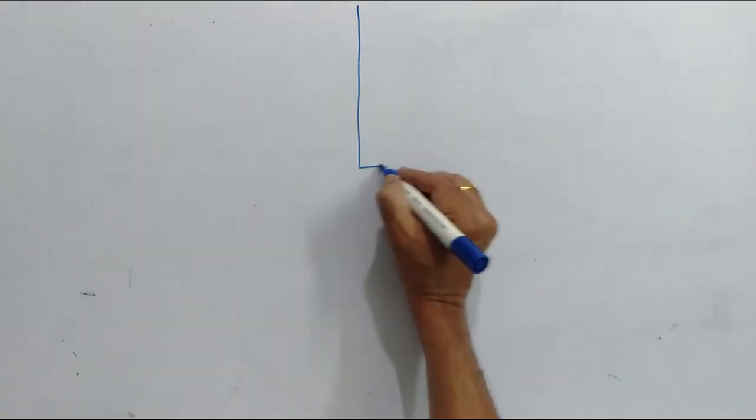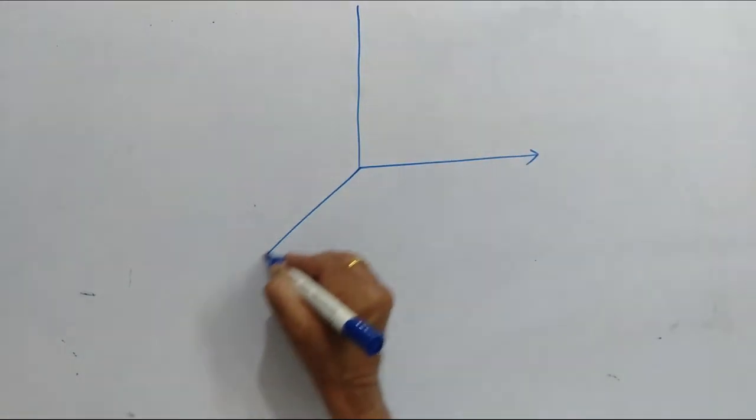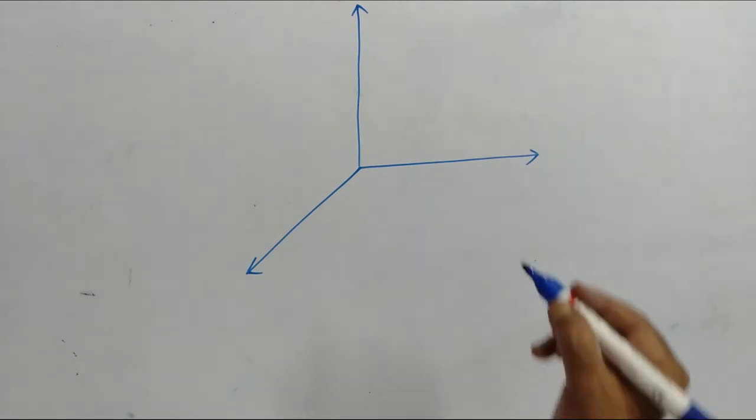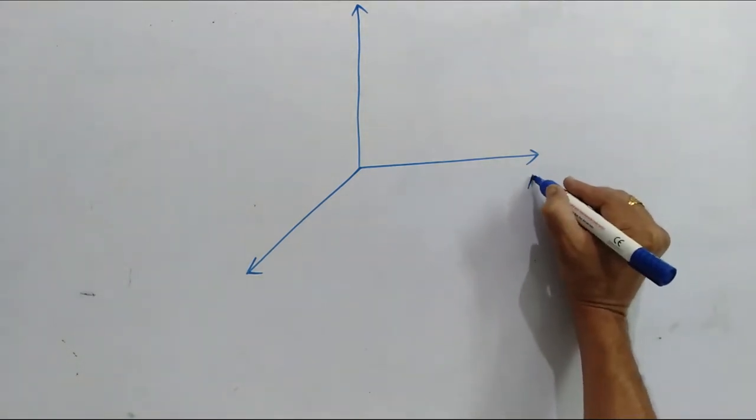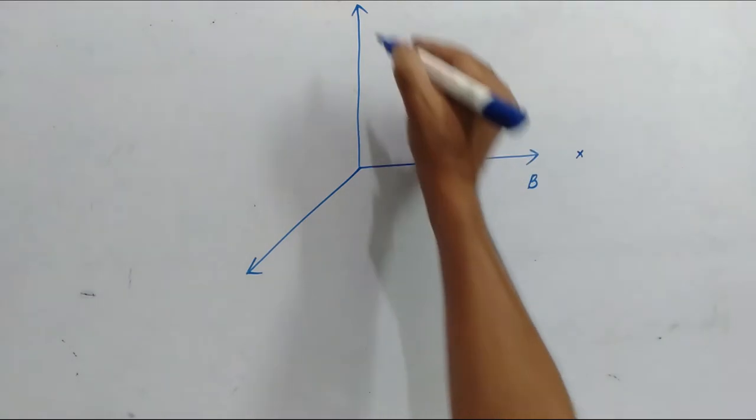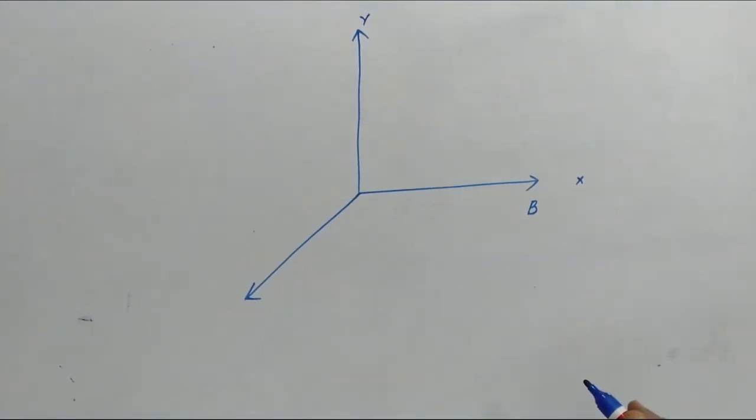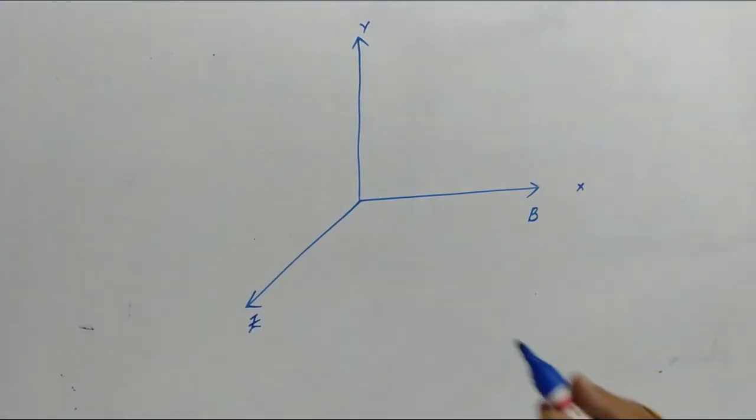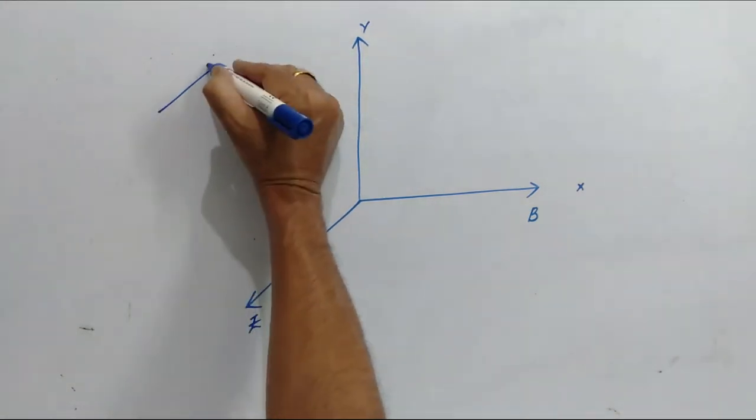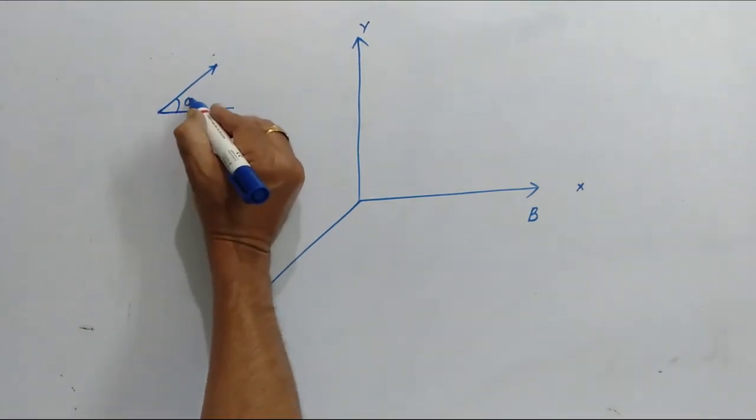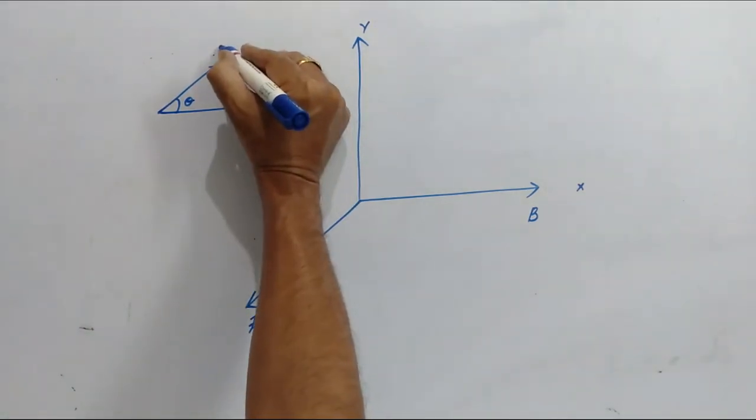Now, let's take another case where the particle is not projected with 90 degrees but with some other angle. Let's consider this is the direction of B along x-axis, this is y-axis and this is z-axis. If the particle is projected making an angle theta with the magnetic field direction...